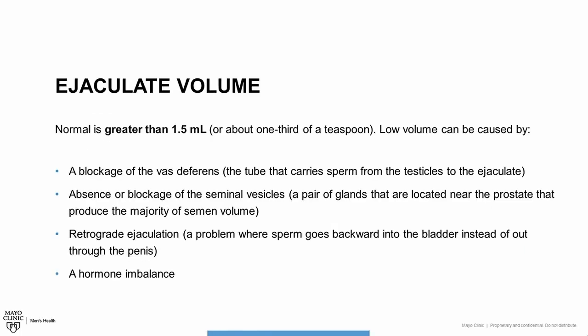Ejaculate volume is the amount of semen that you ejaculate. A normal amount is more than 1.5 milliliters, or about a third of a teaspoon. You should tell your doctor if part of your specimen collection missed the cup. A low amount can be caused by a blockage of the tube that carries sperm from the testicles to the ejaculate, which is called the vas deferens. It can also happen if you don't have seminal vesicles or have a blockage of them. These are a pair of glands located near the prostate.